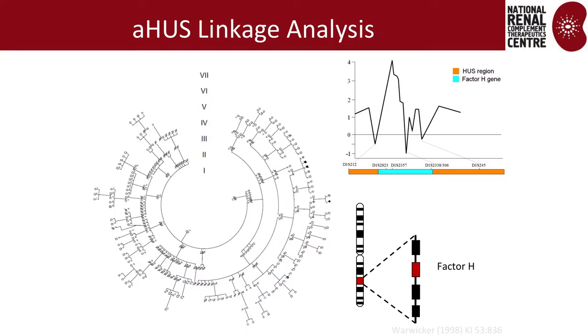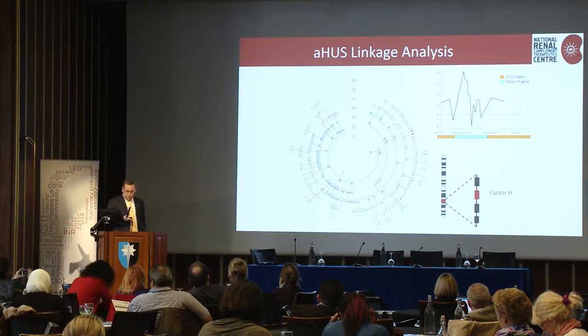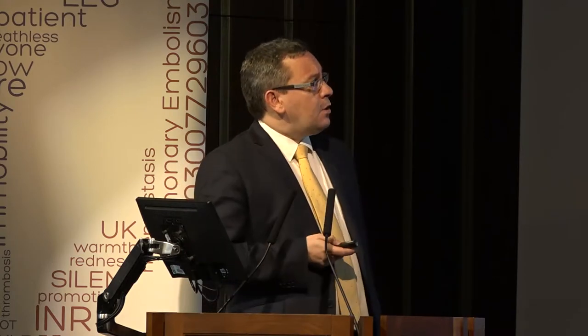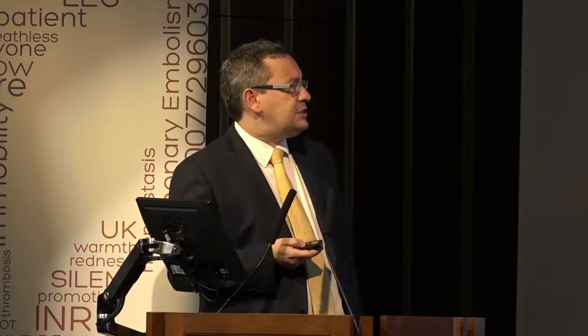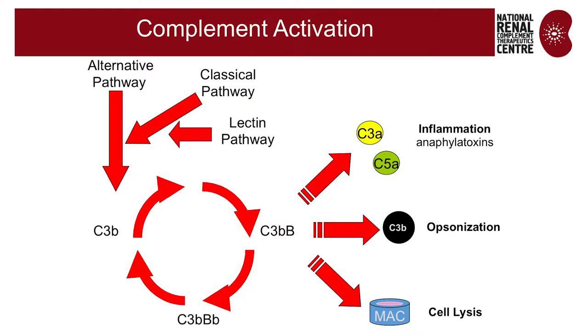So why is Newcastle interested in complement and atypical HUS? It comes from an incredibly large pedigree and two others, where 20 years ago we were able to undertake genetic analysis, which showed linkage to the RCA cluster on chromosome 1, which houses many of the genes for the alternate pathway of complement.